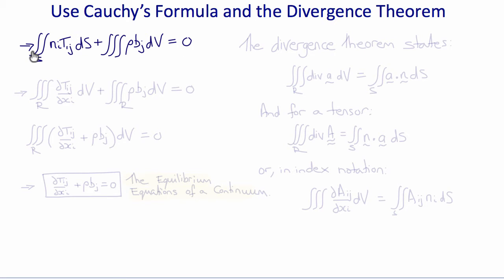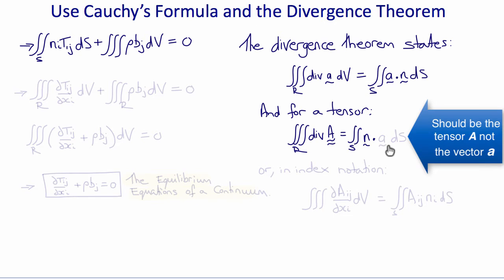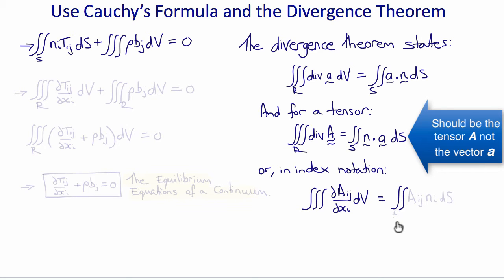To go further, we need to somehow combine a surface integral and a volume integral, and to do that we use the divergence theorem. The divergence theorem states that the volume integral of the divergence of a vector is equal to the surface integral of that vector dotted with the outward normal N. The same theorem holds for a tensor: the volume integral over R of the divergence of tensor A equals the surface integral over S of N dot A, where N is the outward normal. In index notation, the volume integral of del A_ij / del X_i with respect to V equals the surface integral of A_ij N_i with respect to S.